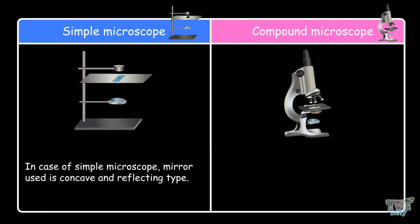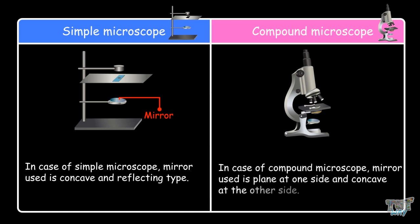In the case of a simple microscope, the mirror used is concave and of reflective type. And in the case of a compound microscope, the mirror used is plain at one side and concave on the other.